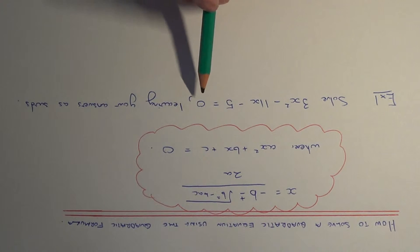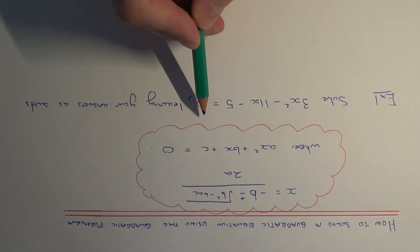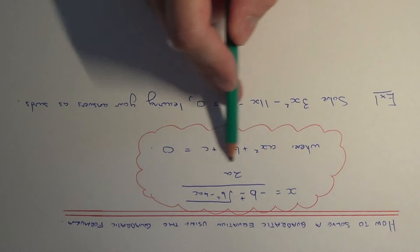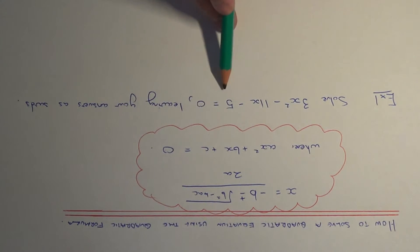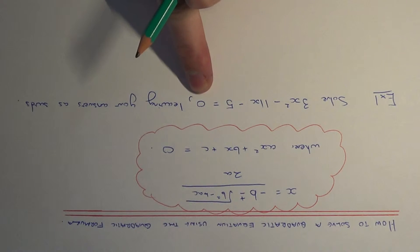The first thing you need to make sure is that the equation is in the format written above. All the terms need to be on the left-hand side and it needs to equal 0. This one's already done.